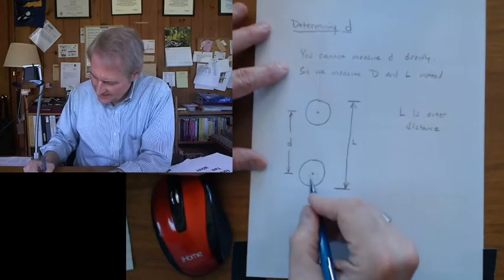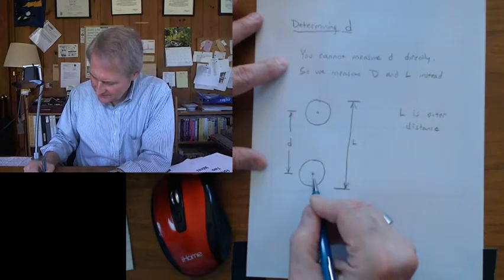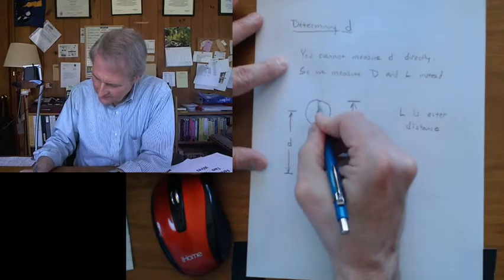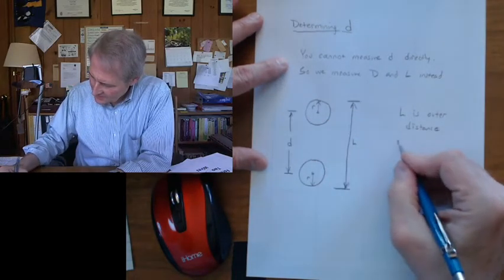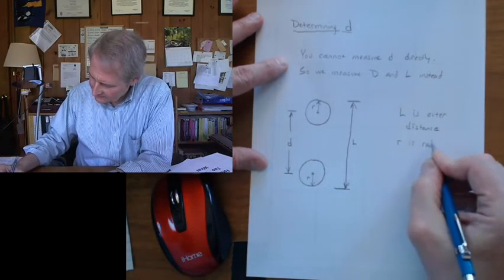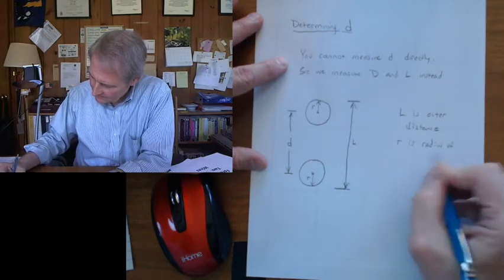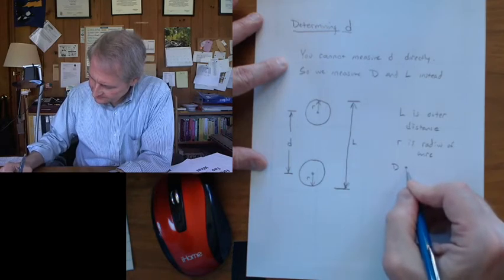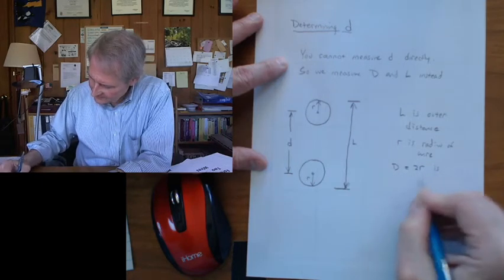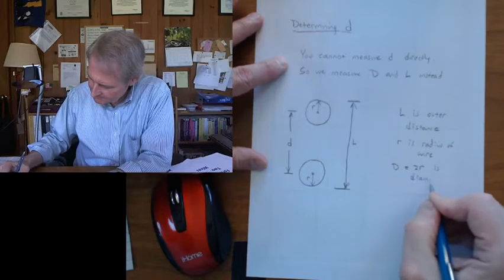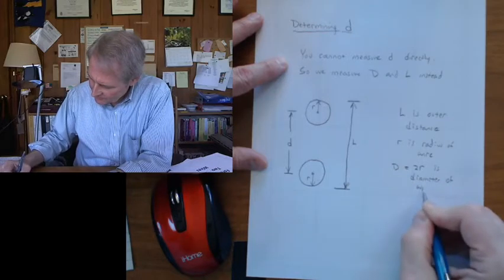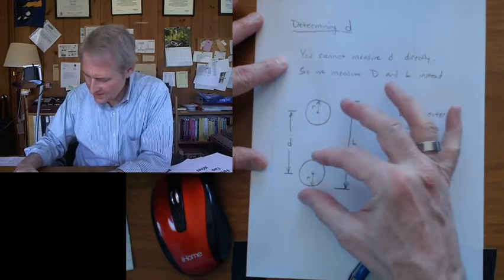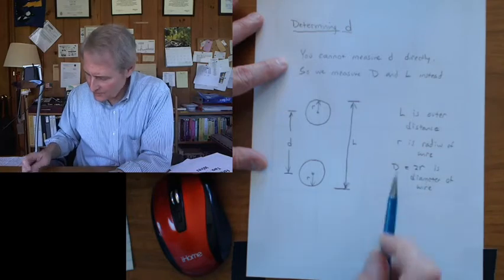The other thing is, we can measure the diameter or the radius of the wires. Let me call this R, the radius. R is radius of the wire. We can't measure that. But capital D, which is 2R, is the diameter of the wire. And we can measure capital D because we can clamp the calipers onto the wire and measure the distance from one side to the other.